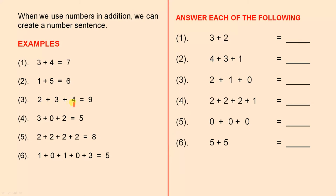Two plus three plus four equals nine. Three plus zero plus two equals five. Two plus two plus two plus two equals eight. And one plus zero plus one plus one plus zero plus three equals five.